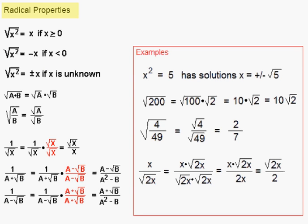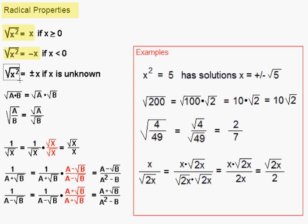Now let's take a look at some radical properties. If you have the square root of x squared, that equals x if x is known to be a positive value. So if x were 2, 2 squared would be 4 and the square root would be 2. However, the square root of x squared is the opposite of x if we know that x is a negative value. For example, if x is negative 3, negative 3 squared would be positive 9, and when we take the square root we'd get 3 — that's equal to the opposite of x. And in an equation, the square root of x squared is plus or minus x if x is some unknown.